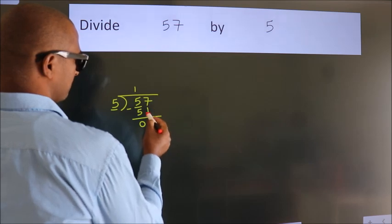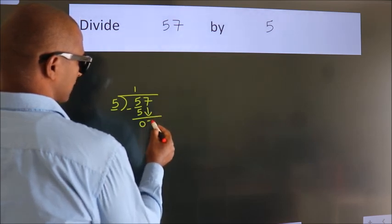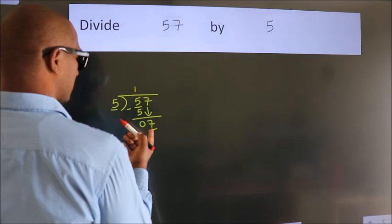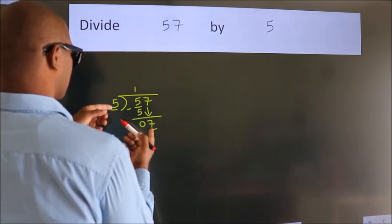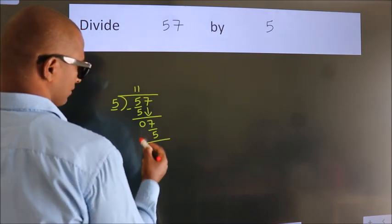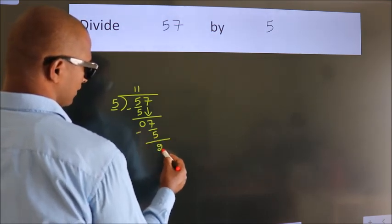After this, bring down the number beside it. So 7 down. So 7. A number close to 7 in the 5 table is 5 once, which is 5. Now we should subtract. We get 2.